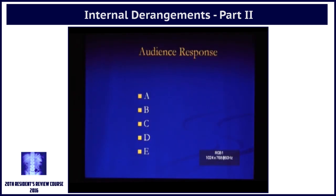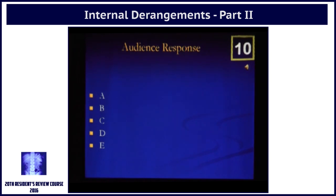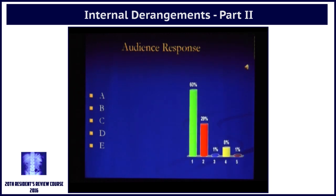I will show you the image again and your time starts now. AVN, insufficiency fracture, ankylosing spondylitis, and tuberculosis — which one is this? Extensive light bulb-like marrow edema that we see here — what is it that we are looking at? This is bad, this is really really bad.